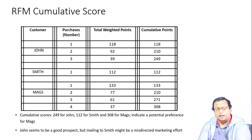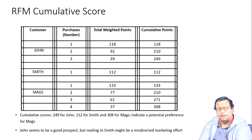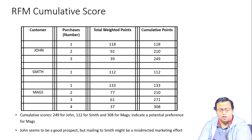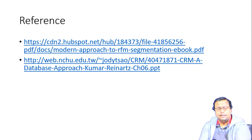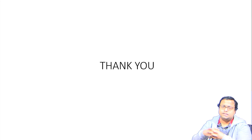The customer with the highest cumulative points is the most preferred, and the one with the lowest is the least preferred. For example, John seems to be a good prospect, but mailing to Smith might be a misdirected effort because Smith has very low total weighted points. That is how we do RFM analysis. In the next video, we will talk about how to perform RFM analysis in R with a real dataset. Thank you very much, see you in the next video.